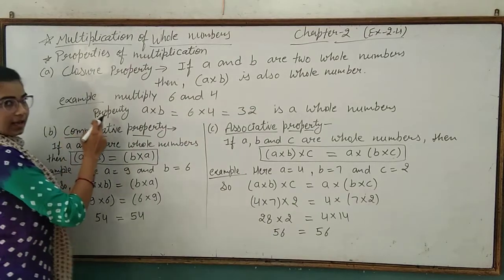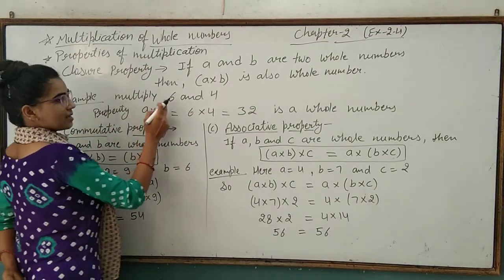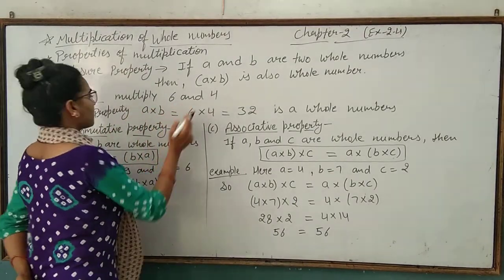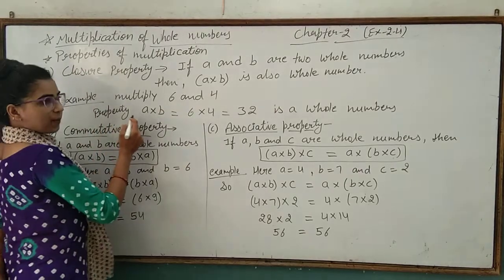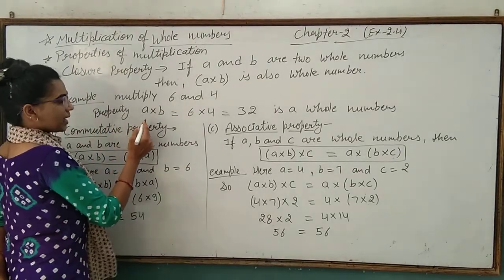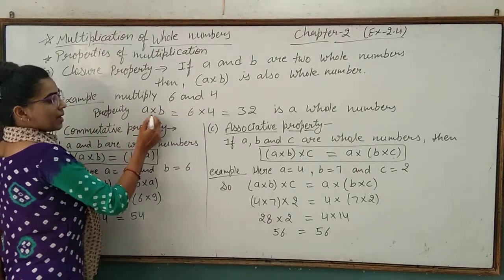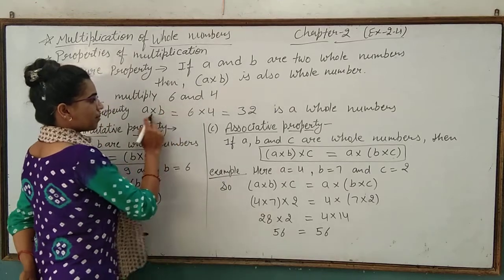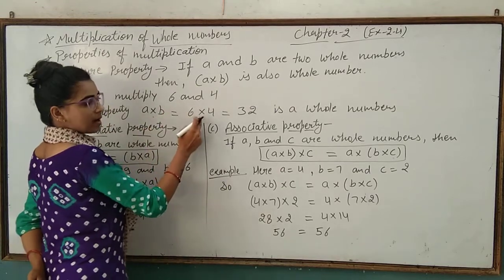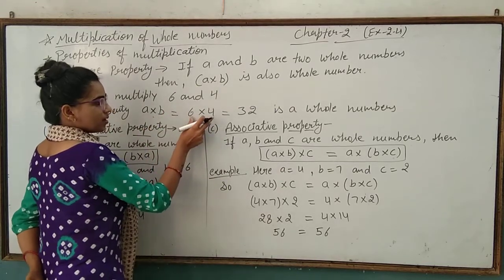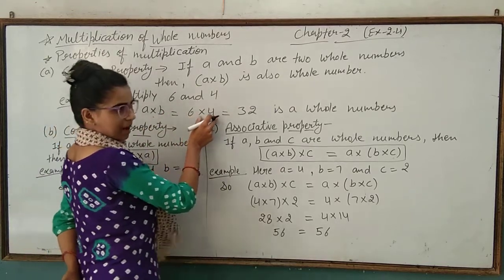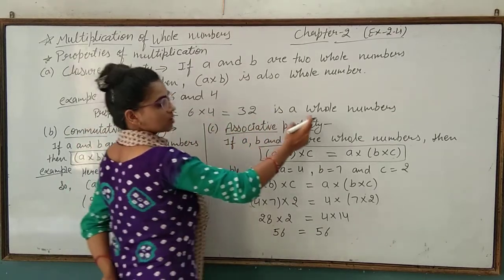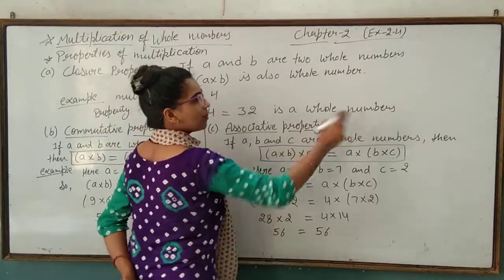Now we take an example. Multiply six and four. Applying the property, a multiplied by b: here a is six and b is four. Six multiplied by four is equal to twenty-four, which is also a whole number.